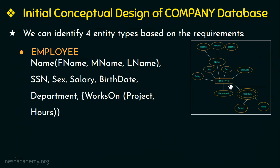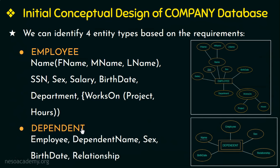The fourth entity type is dependent, with attributes employee, dependent name, sex, birth date, and relationship to the employee. Since this entity type does not have its own key attributes, it is a weak entity type represented by a double rectangle. This weak entity type has a partial key — the dependent name — because it is partially unique and can be combined with a strong entity type to uniquely identify its entities. This is the initial conceptual design of the company database application.